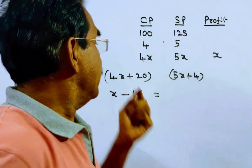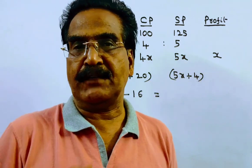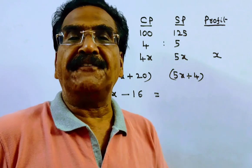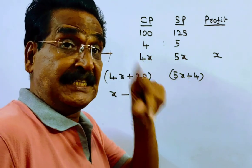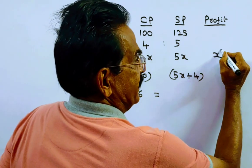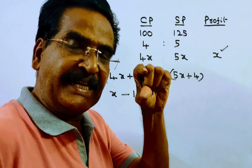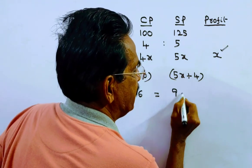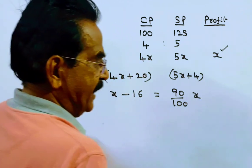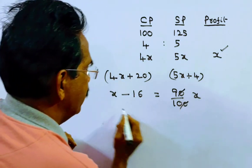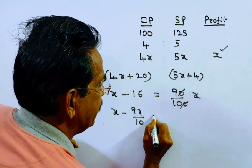According to the problem, when cost price and sold price are increased by 20 rupees and 4 rupees respectively, the profit is decreased by 10 percent. The earlier profit was x, and the new profit is 90 percent of the earlier profit. So x minus 9x by 10 equals 16.